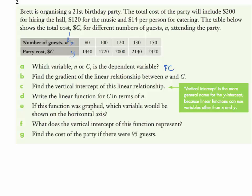The question asks us to find the gradient of the linear relationship between n and c. We use change in y over change in x. So that's 1720 minus 1440 over 100 minus 80, which equals 280 over 20, giving a gradient of 14.